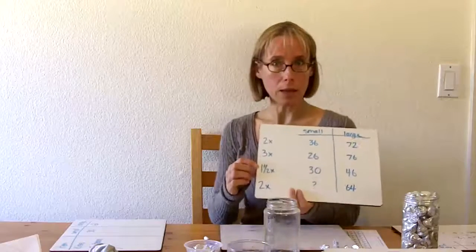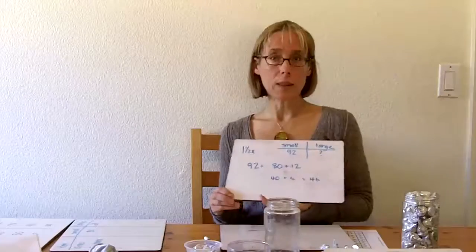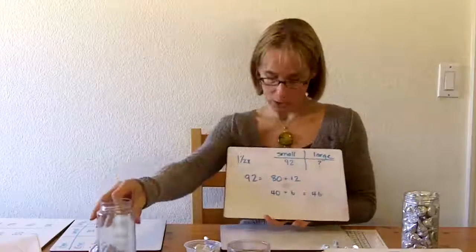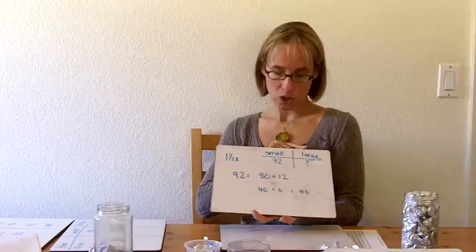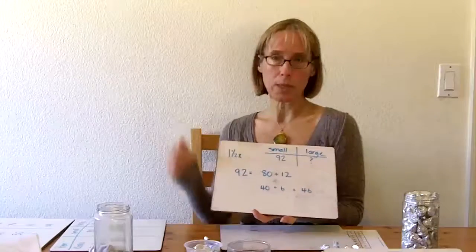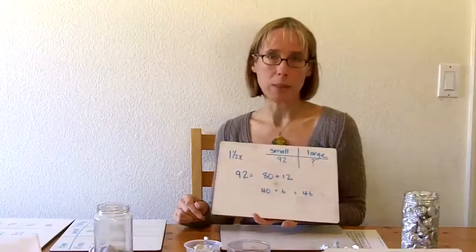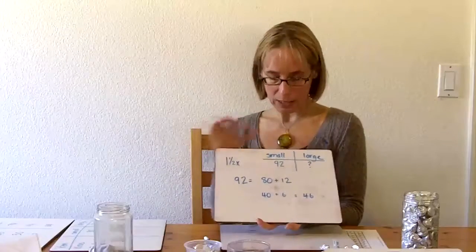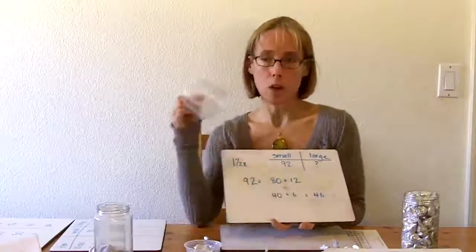In second grade, with a high group of second grade students, I was working on the one and a half times jar. And I want to share with you the thinking of one student. So she knew that the large jar was one and a half times the small jar, and there were 92 objects in the small jar. I don't remember what it was, it may have been gummy bears, but let's say that there were 92 gummy bears in this small jar.